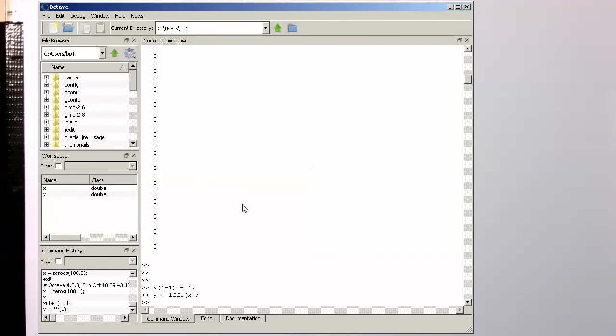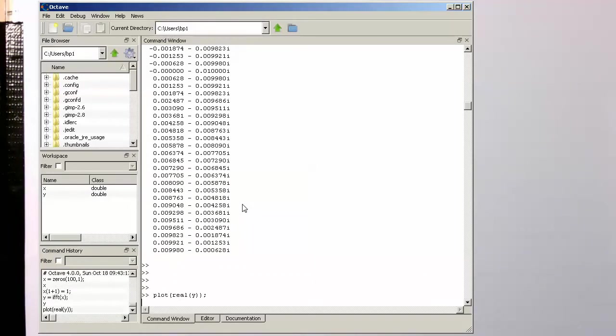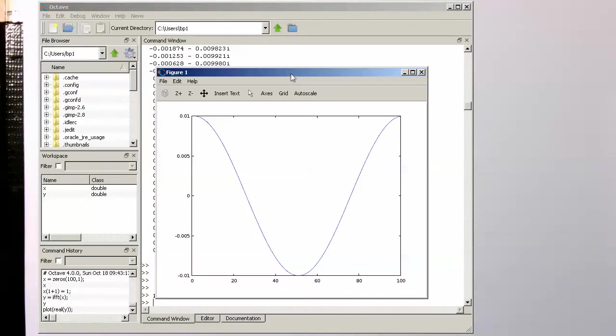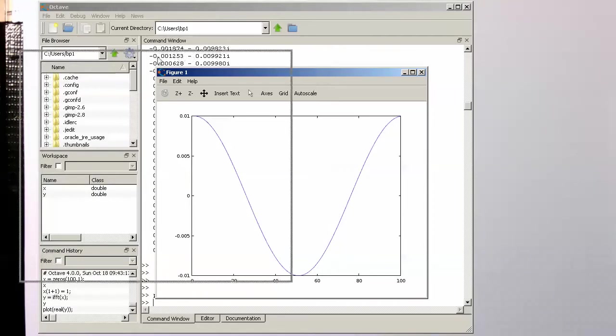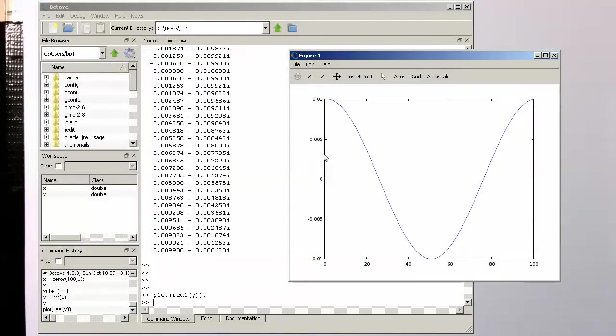Let's set this here to one and now do an inverse Fourier transform of that. And let's have a look what we are getting here. Let's plot the real part of that and bring it here over. What we see here now is